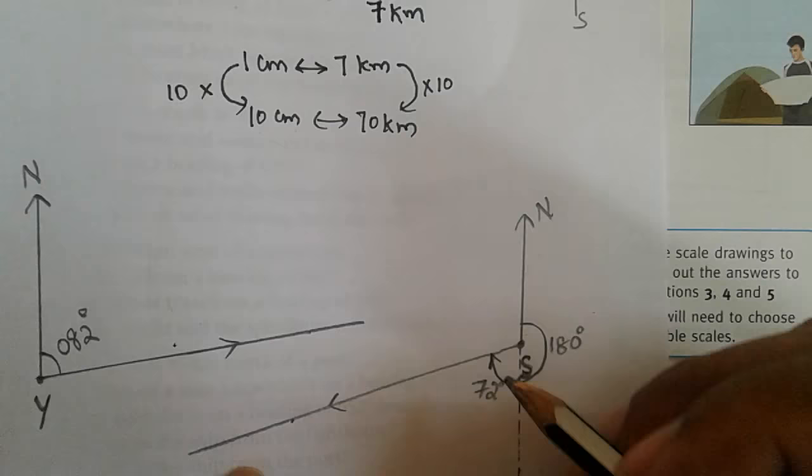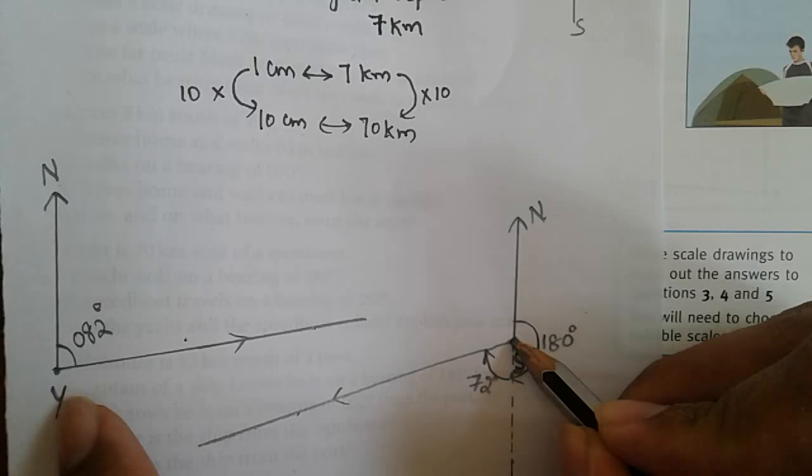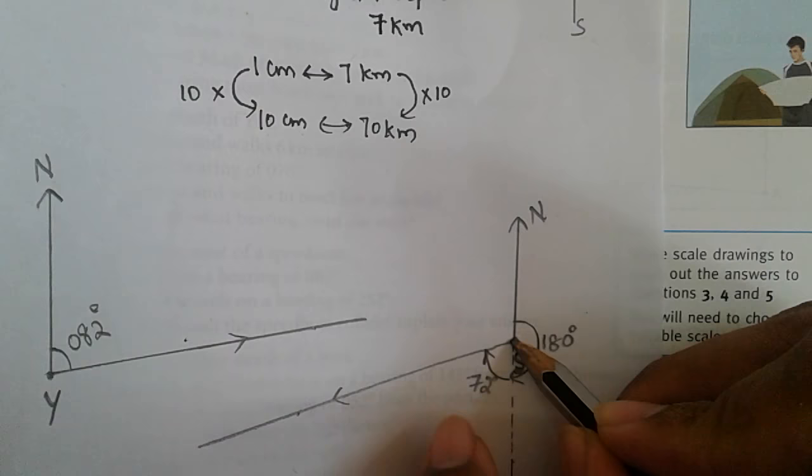So now here is the speedboat and to the west of it is the yacht. The distance between them is 10 centimeters in the diagram, so 10 times 7 will give actual distance which is 70 kilometers.